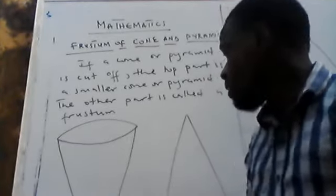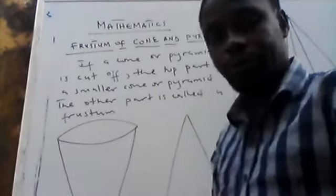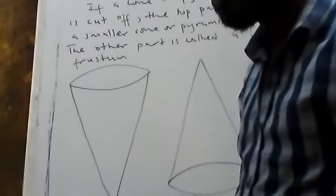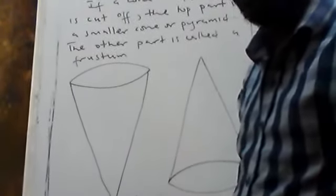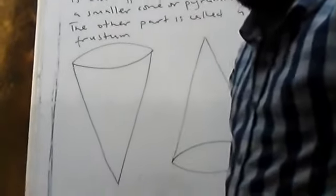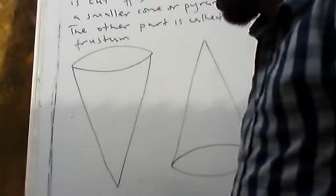Let me draw a cone on the board. A cone is like this. An example of a cone is a funnel, and some ice cream cones — not all ice cream are in the form of a cone.